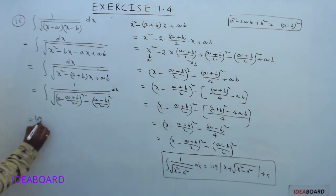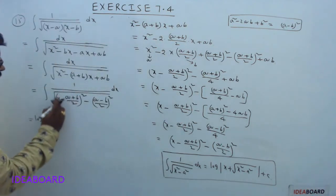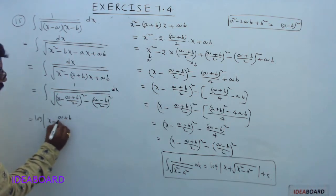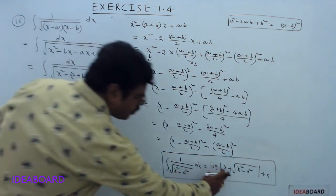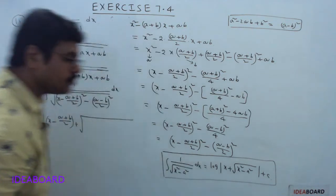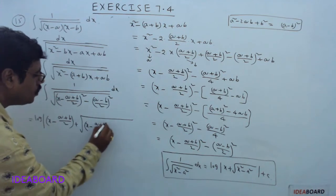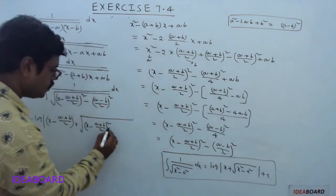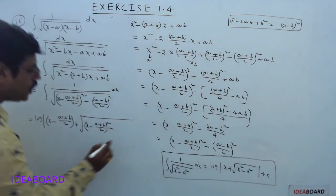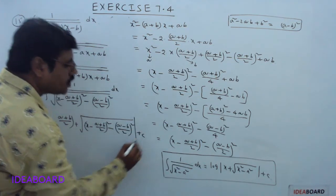This equals log mod of: what is the x value? x minus (a+b)/2. So: x minus (a+b)/2 plus square root of (x minus (a+b)/2)² minus ((a minus b)/2)² plus some constant C.